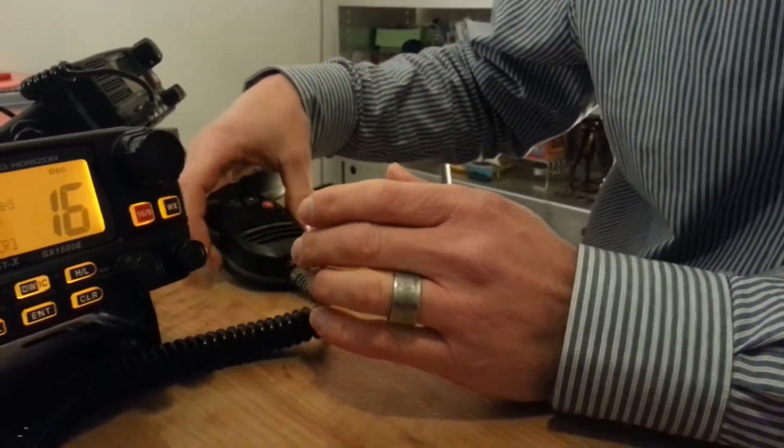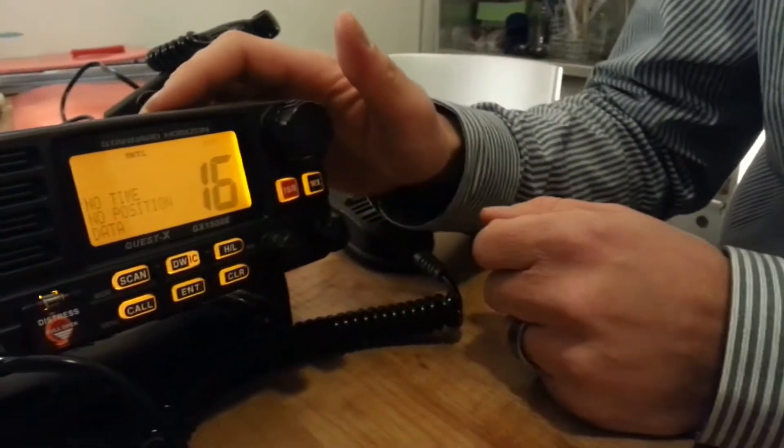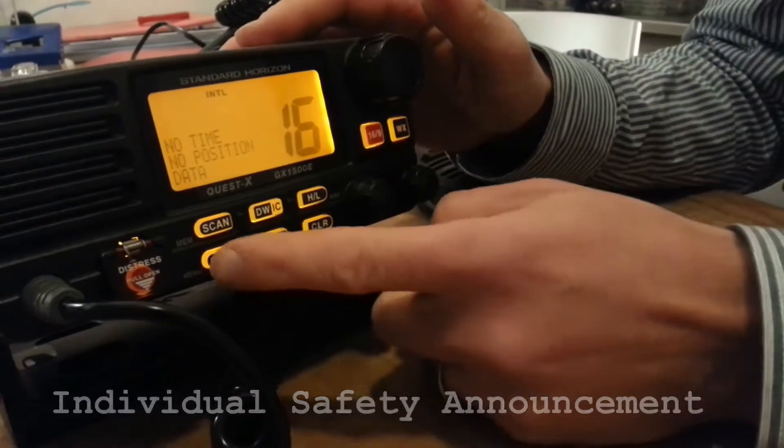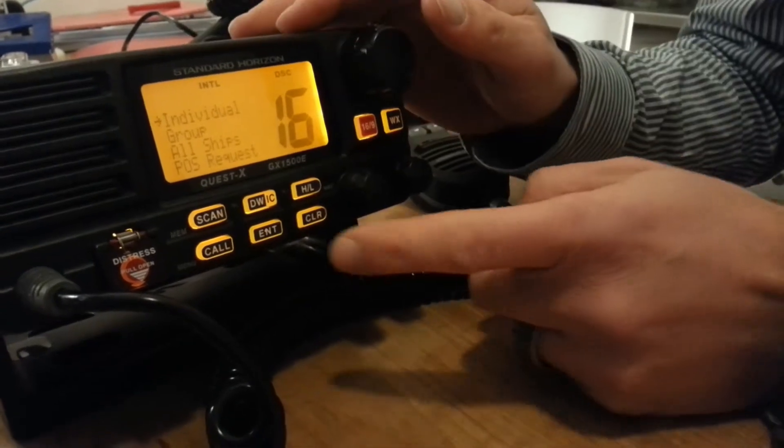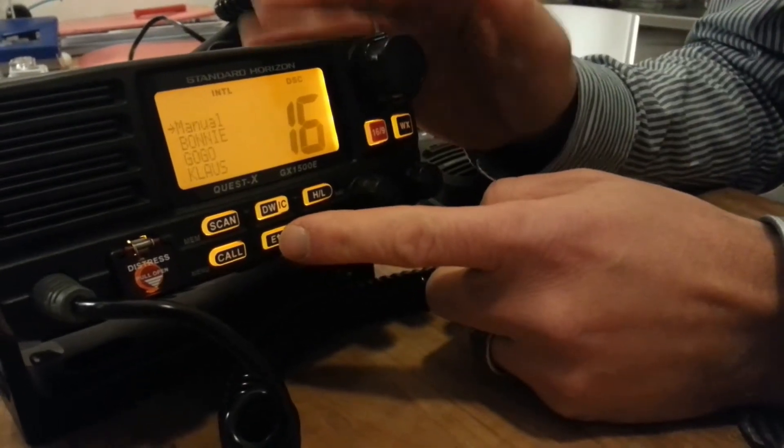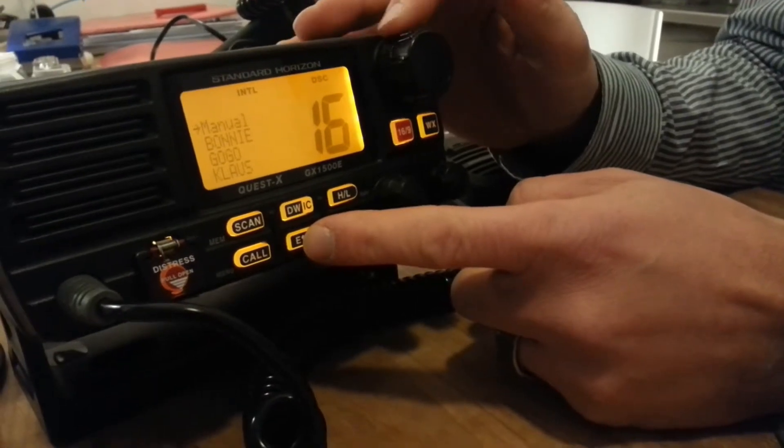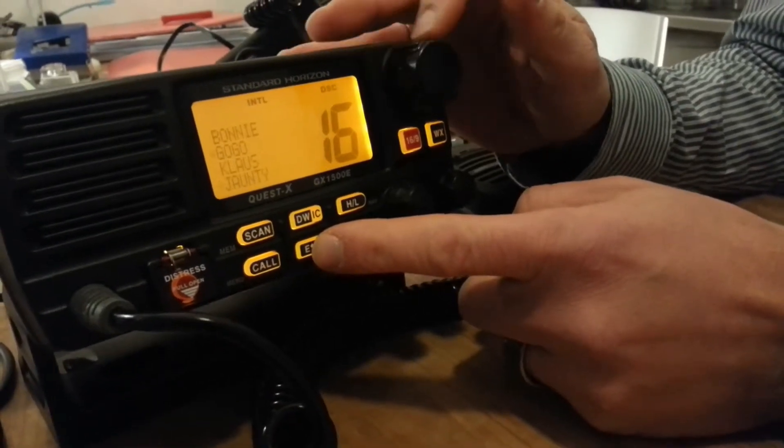If you prefer sending this message to, for example, a coast station, you want to go on call but choose individual, and then either you have to enter manually the MMSI number from the coast station, or you probably have it in your directory.